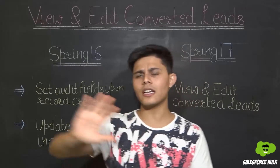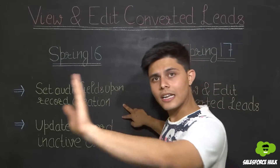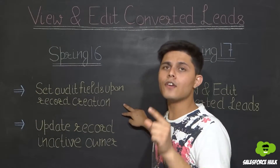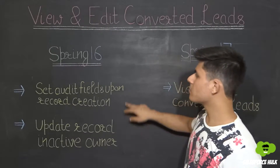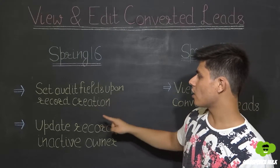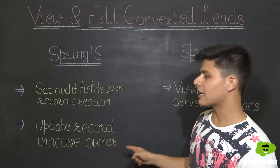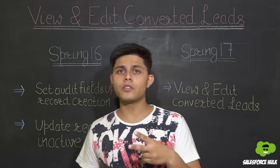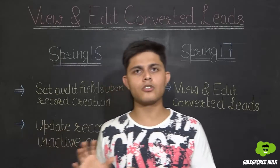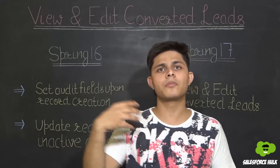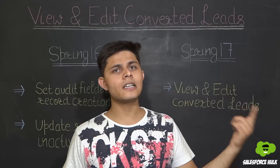For example, for a user A, we need to give both of these permissions if we want that user to edit the converted leads. These permissions are: Set Audit Fields Upon Record Creation, and the second one is Update Records with Inactive Owner. Both of these permissions need to be enabled on that profile, or assigned using a permission set and given to the user who needs to edit converted leads.